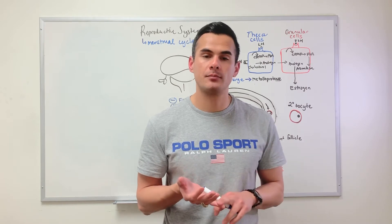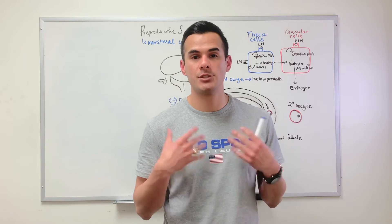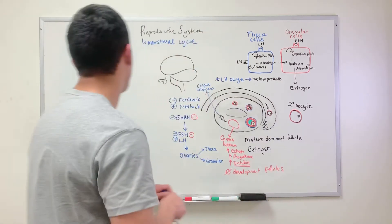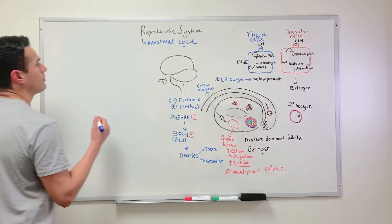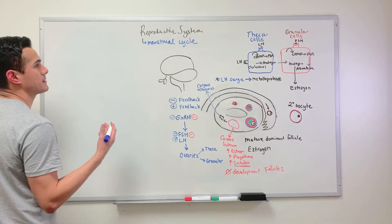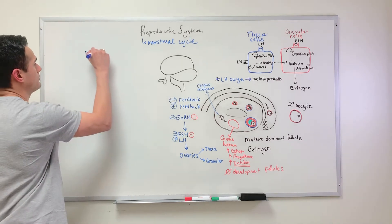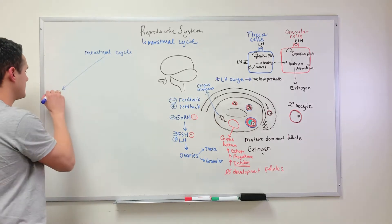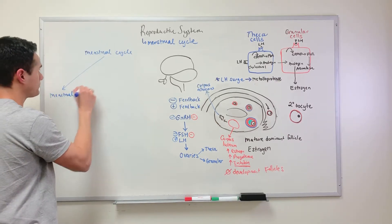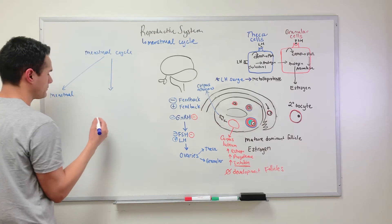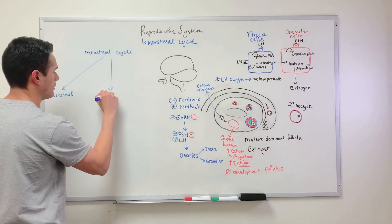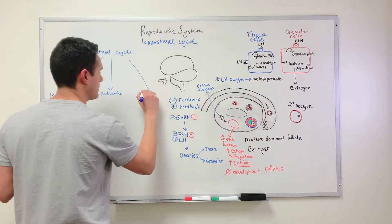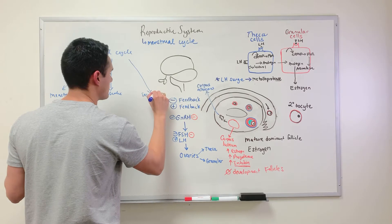The functional layer is the layer that's going to be shed, and that happens during menstruation. The menstrual cycle is divided into three phases: the menstrual phase, the proliferative stage, and the secretory stage.